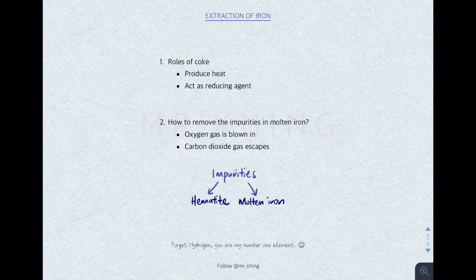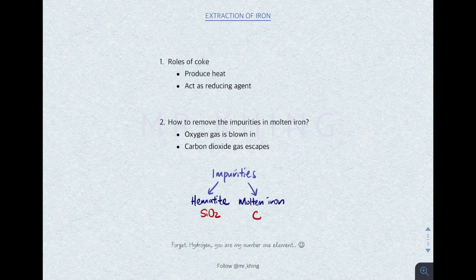Next question: how do you remove the impurities in molten iron? Remember, the impurities in hematite and in molten iron are different. In hematite, the impurity is silicon dioxide. In molten iron — the iron obtained from the furnace — the impurity is carbon. To remove this carbon impurity, we can blow in oxygen gas. The oxygen gas reacts with the carbon to form carbon dioxide gas, and the carbon dioxide gas is removed.